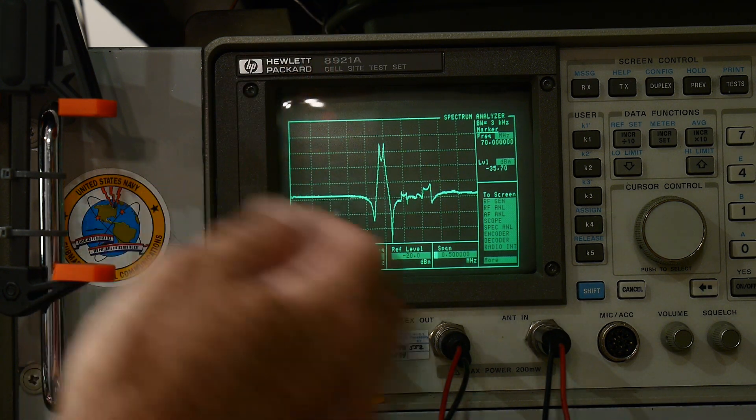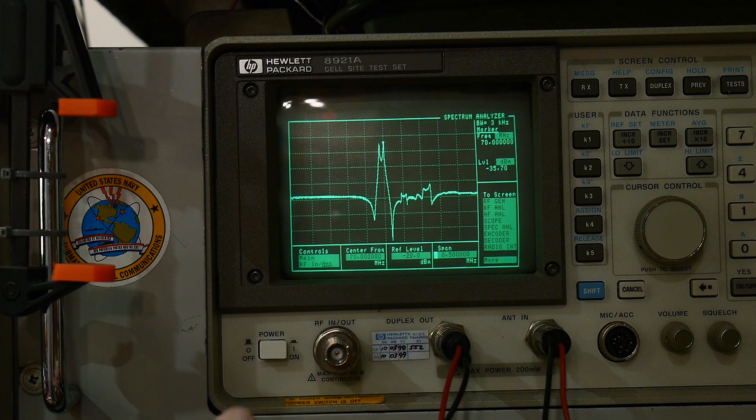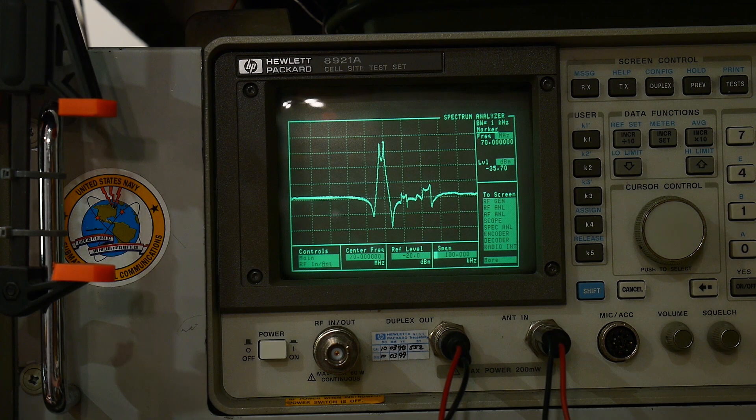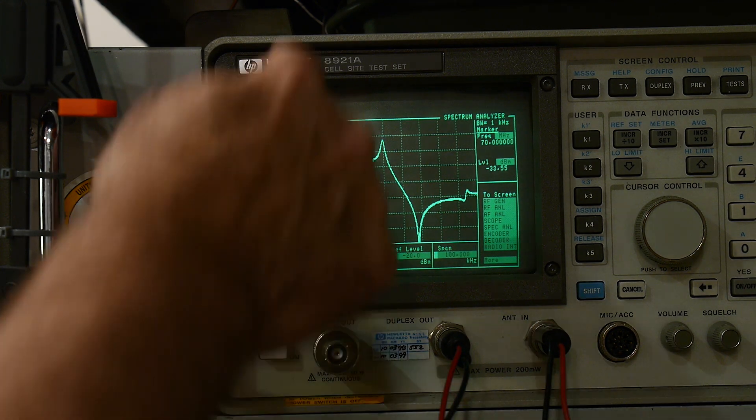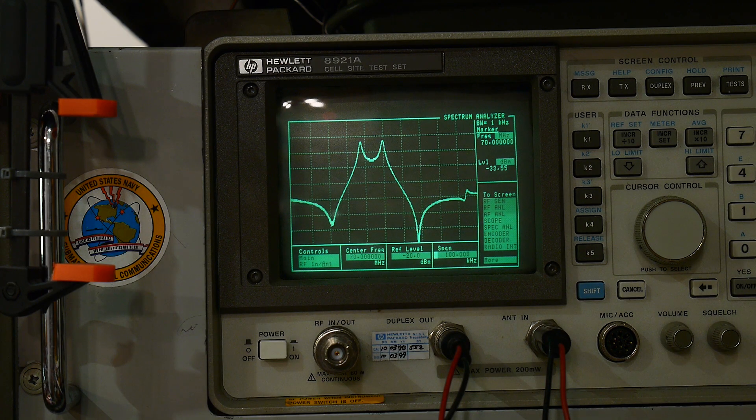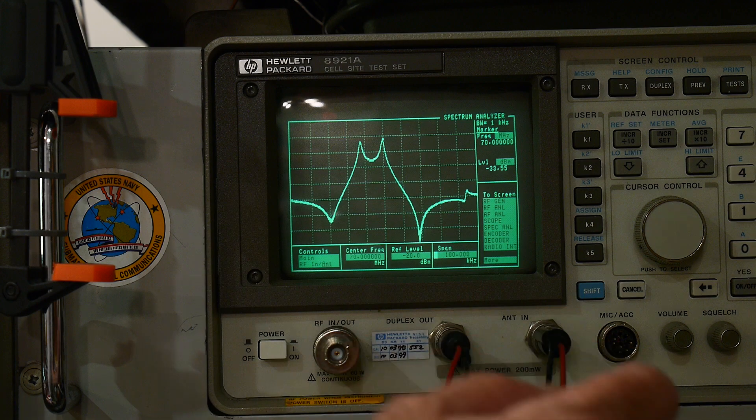So this is a 500 kilohertz span. Let's go to a 100 kilohertz span. Yeah, there we go. So it goes up, it's a little double hump. So I don't know if that means two pole, I guess. And it's got a couple extra bumps out there.